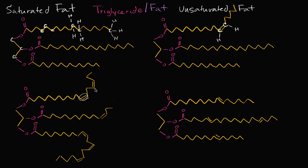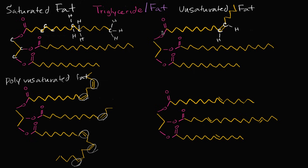This one right over here has multiple double bonds, so it's called a polyunsaturated fat. Since that other one only has one double bond, we call it a monounsaturated fat. So both are unsaturated fats — this one has many double bonds, so it's polyunsaturated; that one has one, so it's monounsaturated.